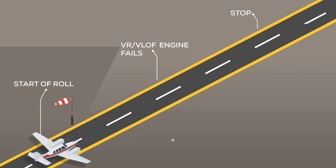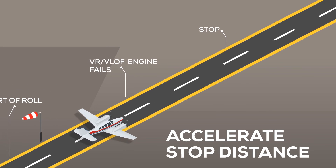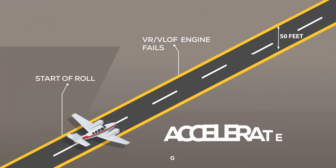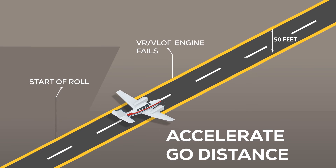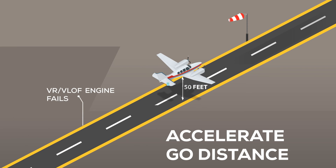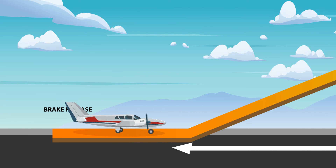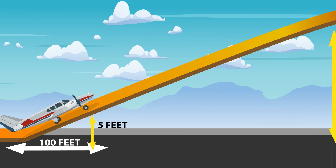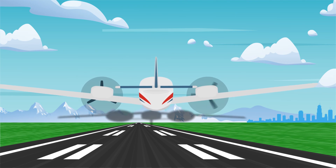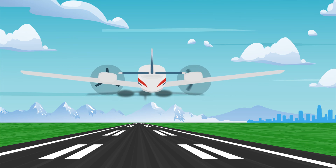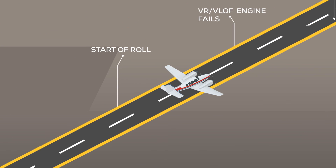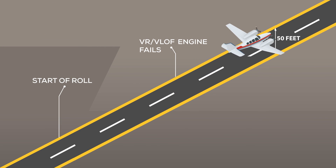Let us review. The accelerate stop distance is the runway length required to accelerate to a specified speed, experience an engine failure, and bring the airplane to a complete stop. The accelerate go distance is the horizontal distance required to continue the takeoff and climb to 50 feet, assuming an engine failure at a specified speed. The climb gradient is a percentage that represents altitude gain per 100 feet of horizontal distance and is affected by wind. The pilot uses performance and limitation figures to create a decision point during the takeoff to determine the proper course of action. The takeoff will be rejected if the engine failure occurs before the decision point, and continued if it occurs after the decision point.